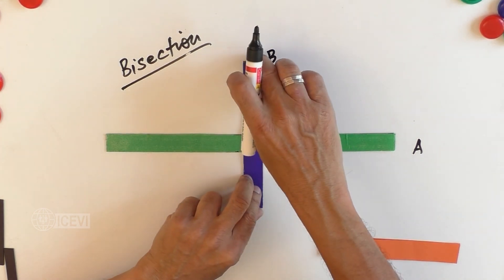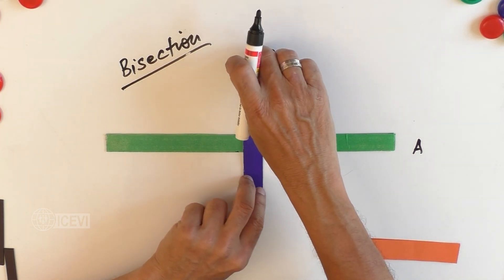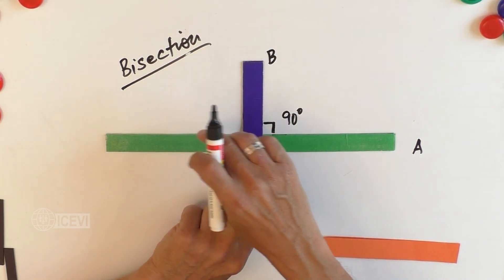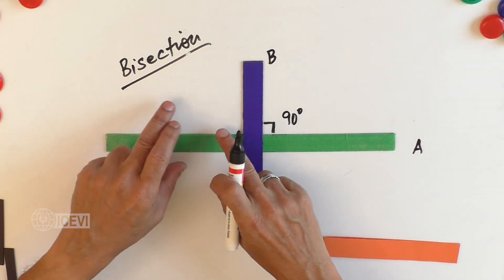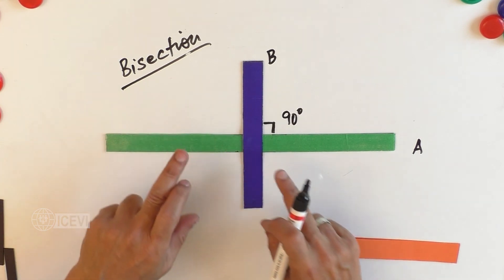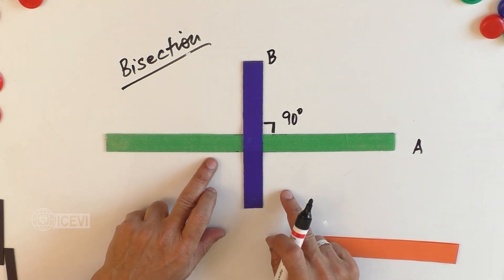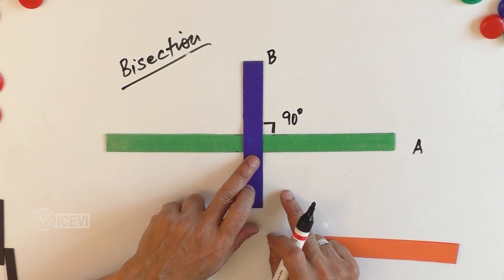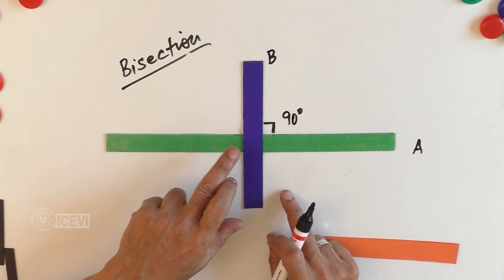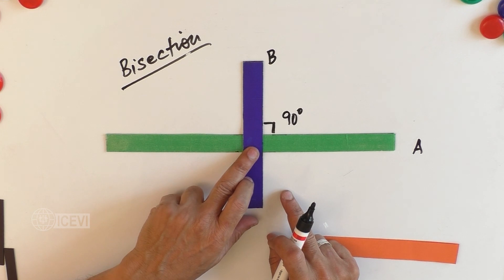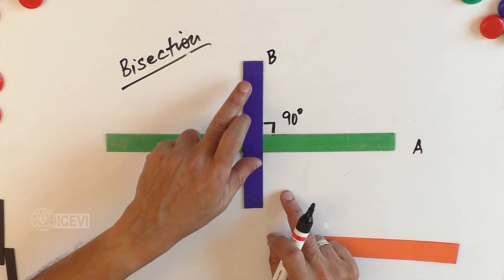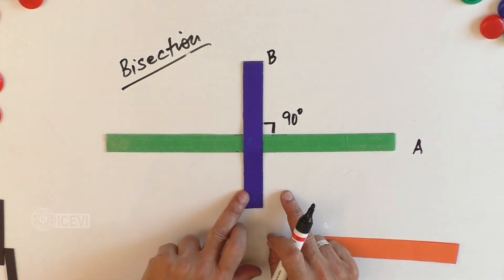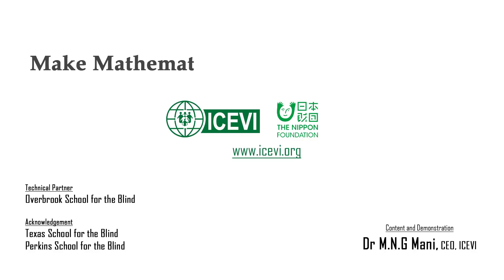So we have discussed: intersection, point of intersection, bisection, bisector, and perpendicular bisector.